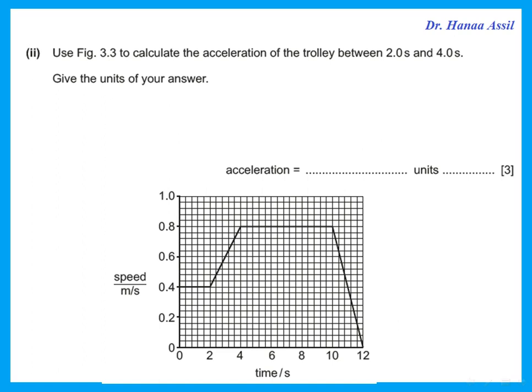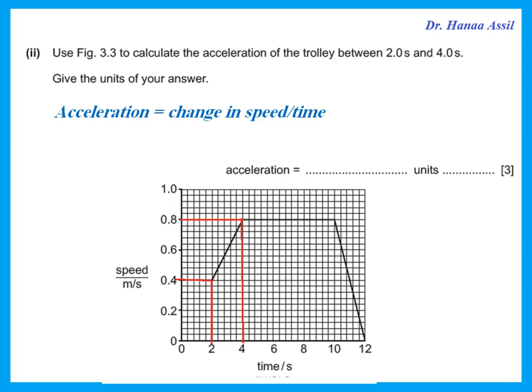Use figure 3.3 to calculate acceleration between 2 seconds and 4 seconds. Acceleration is change in speed over time. Between 2 seconds and 4 seconds, the speed changes from 0.8 to 0.4, and the change in time is from 4 to 2. Dividing those differences gives 0.2 — and the unit for acceleration is m/s².